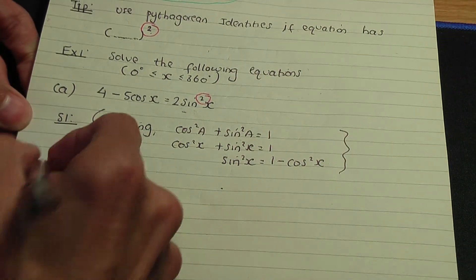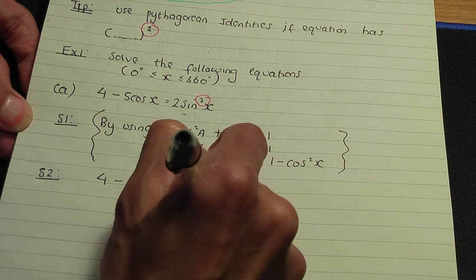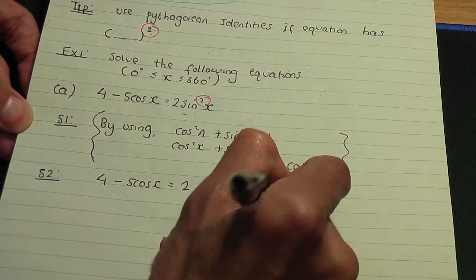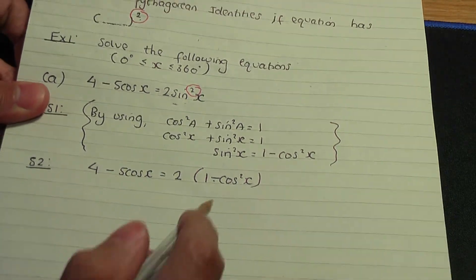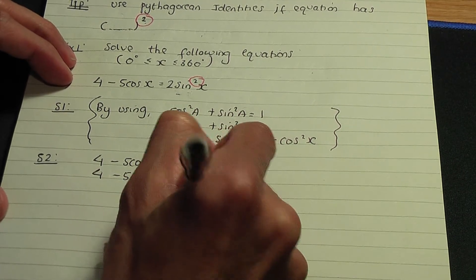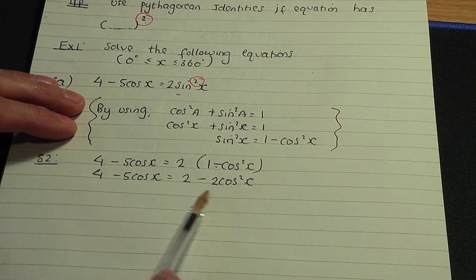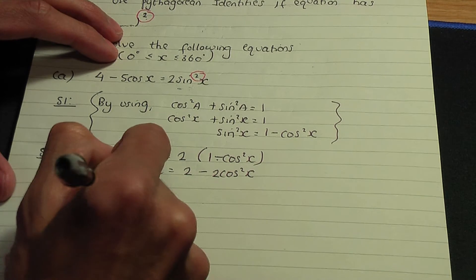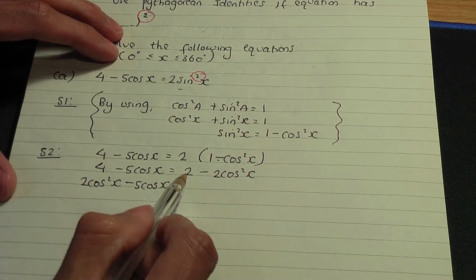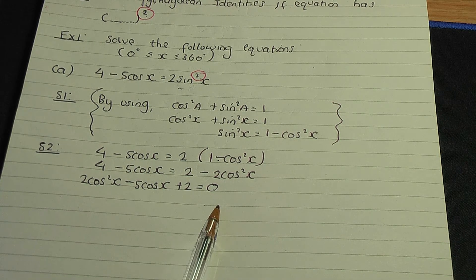Step two: substitute into our equation. We have 4 minus 5 cos x on the left, equal to 2 times open bracket (1 minus cos squared x). Opening up the brackets: 4 minus 5 cos x equals 2 minus 2 cos squared x. Moving terms to one side: 2 cos squared x minus 5 cos x plus 2 equals zero. So we've got a quadratic equation here involving cos.